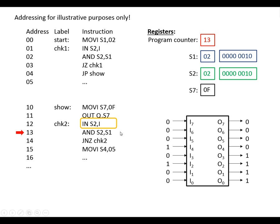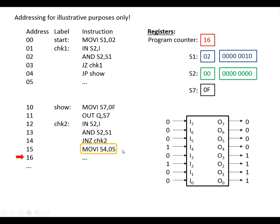We copy the input in again, do the AND, and this time the result is zero. When we reach JumpNZ — jump if not zero — well, it was zero, so we just carry on and don't change the program counter at all.